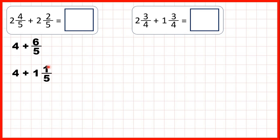6 fifths becomes 1 and 1 fifth, because 6 divided by 5 is 1 remainder 1, or because 1 times 5 is 5 plus 1 is 6, and that's the numerator of our improper fraction. So 4 plus 1 is 5, and the 1 fifth stays the same, so our answer is 5 and 1 fifth.